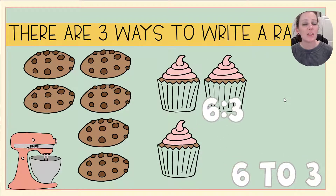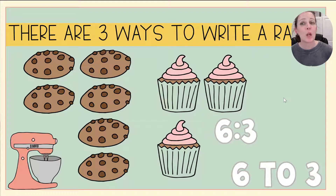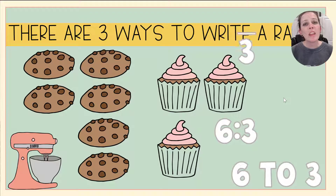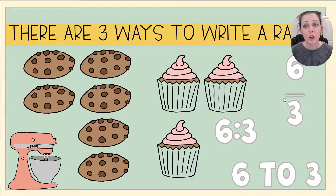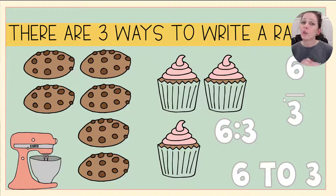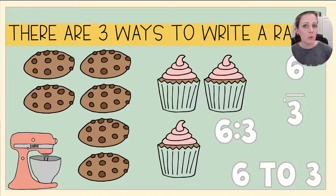We can also write the ratio with a colon, but we still say it the same way — six to three. Or we can write it so that it looks like a fraction, but we don't say 'six thirds'; we say 'six to three.' So no matter how you write it, you say it the same way. The number of cookies to cupcakes in this situation is six to three.